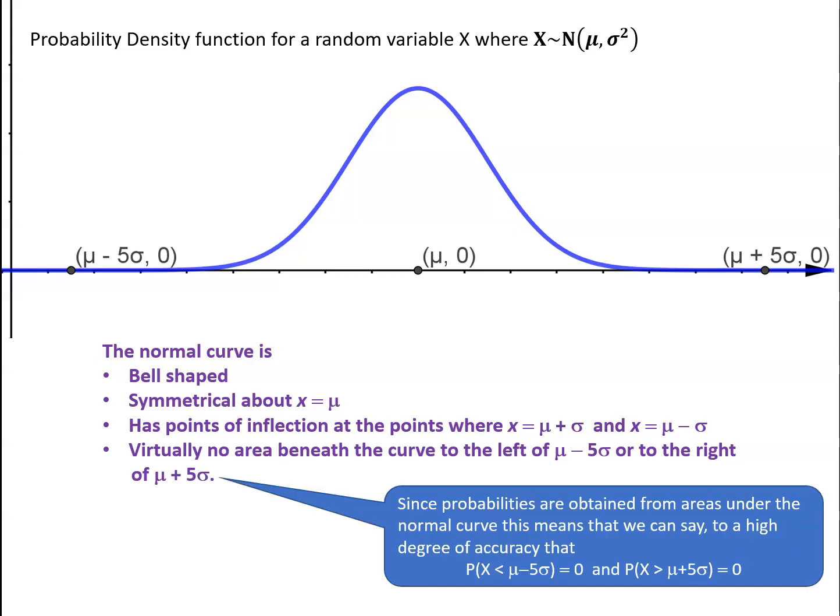Now since probabilities are obtained from areas under the normal curve, this means that we can say to a very high degree of accuracy that the probability that x is less than μ minus 5σ is 0 and that the probability that x is greater than μ plus 5σ is equal to 0. Now these properties we will find are useful as we proceed in later videos to actually use the normal distribution to obtain probabilities.